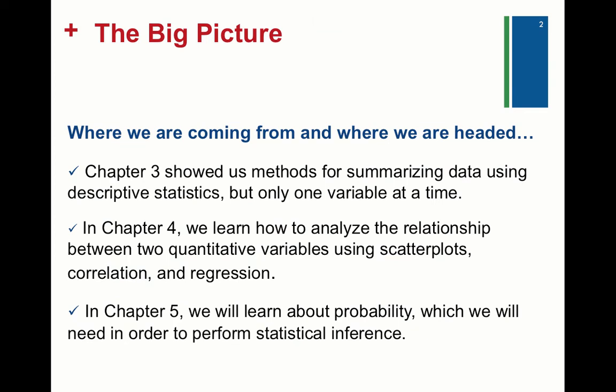So just for the big picture of where we've been and where we're headed, in chapter 3 we came up with methods and statistics for summarizing quantitative data, but we only did one variable at a time, like ticket speeds or ages or number of siblings. In chapter 4, we want to analyze the relationship between two quantitative variables using scatterplots, correlation, and regression.